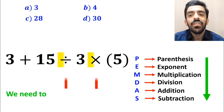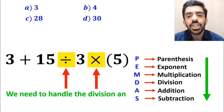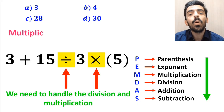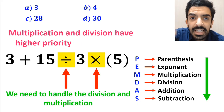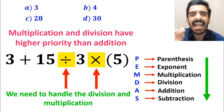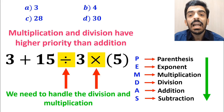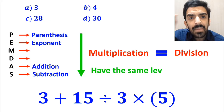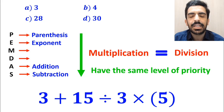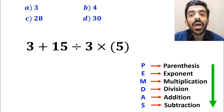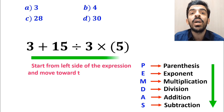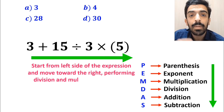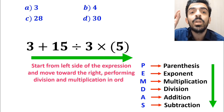In the next step we need to handle the division and multiplication because they have higher priority than addition. It's very important to note that in PEMDAS, multiplication and division have the same level of priority. In this case, the best thing to do is to start from the left side of the expression and move toward the right, performing division and multiplication in order.